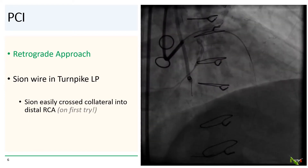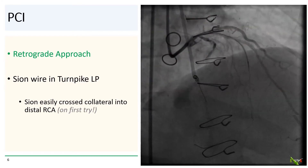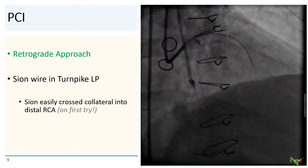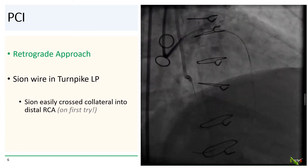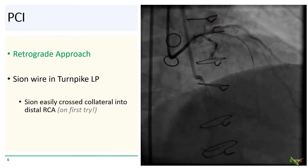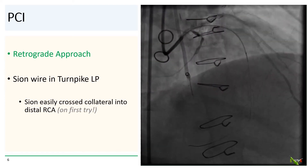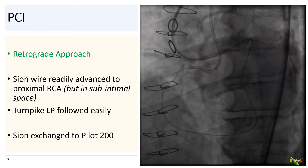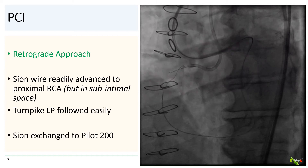So we switched over to retrograde. We used a workhorse BMW wire to engage the septal branch via a Turnpike LP microcatheter, then switched out to a Sion wire. We started septal surfing with the Sion, and on the very first septal we selected, the Sion quickly crossed into the PDA and then quickly up into the distal RCA. The Sion then readily tracked into the proximal RCA, but we could tell by the way it was wrapping that it was also in the subintimal space — it had dissected in the retrograde direction as well. We left it there. The Turnpike LP microcatheter then tracked fairly easily with just a little torquing to get it to turn into the PDA from the septal collateral.